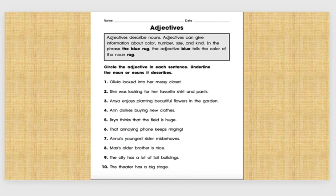Number six: That annoying phone keeps ringing. I'll give you a minute to think about it. One of these words is an adjective. What do you think it is? First I look for the nouns. Is that a noun? Is annoying a noun? Is phone a noun? Think of the nouns and then what describes them. Did you say annoying? I would agree with you.